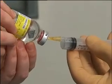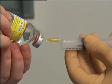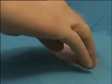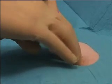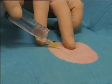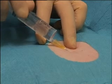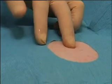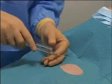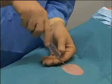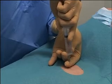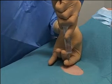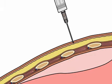Aspirate lidocaine into the 10 milliliter syringe for use as a local anesthetic agent. Using a 25-gauge needle, inject a wheal of lidocaine at the superior edge of the third rib at the mid-clavicular line. Switch to a 22-gauge needle and anesthetize the deeper layers of tissue by inserting the needle at an angle perpendicular to the skin. Before injecting the anesthetic, always aspirate the site to make sure the needle has not entered a blood vessel.